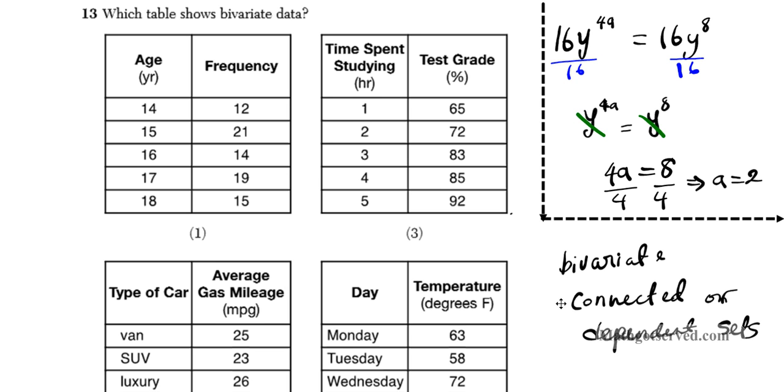If there is any confusion as to the connectedness of the data set, more likely than not, it's going to be univariate. So univariate, you're going to have two independent data sets. But bivariate, you're going to have a dependent and an independent set.